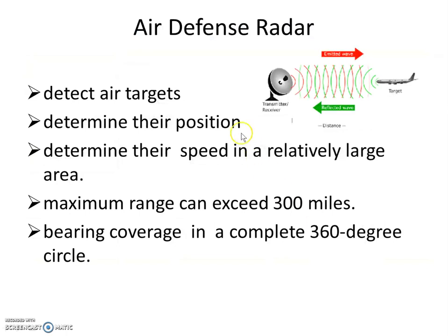An example of a radar is the air defense radar. So how does it work? Air defense radar detects air targets. As the name indicates — air defense — it detects air targets like enemy aircraft, missiles, and airplanes.